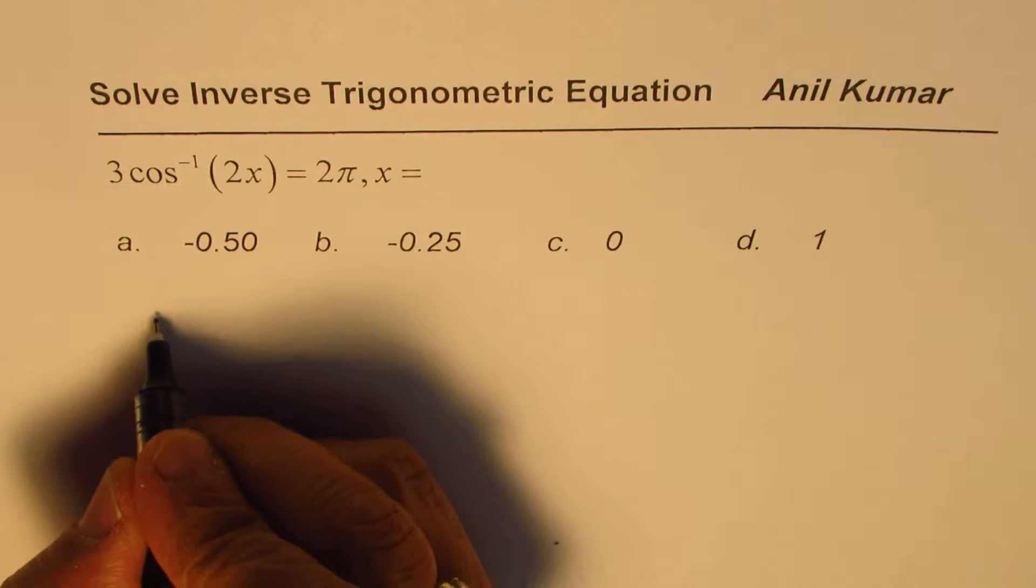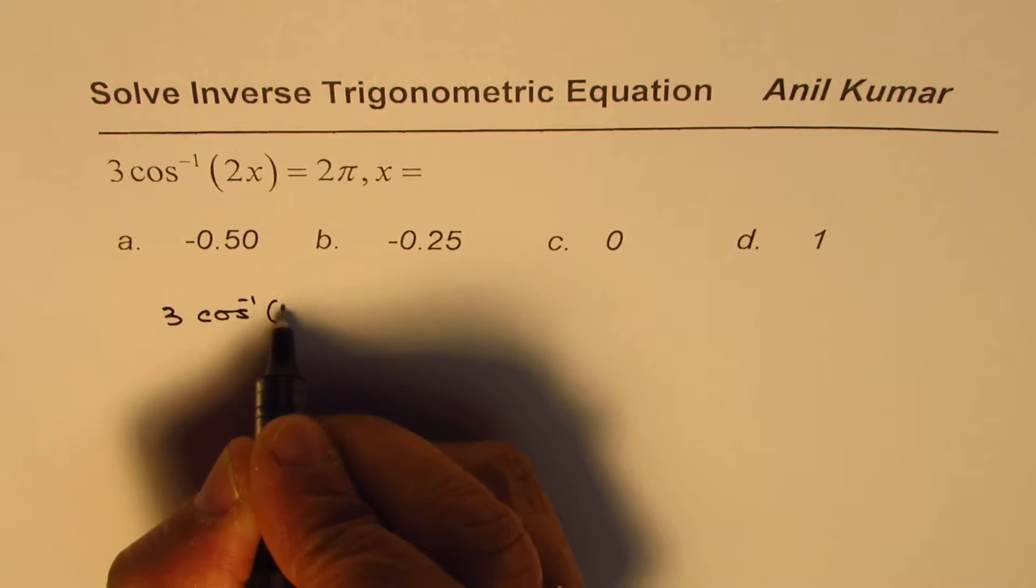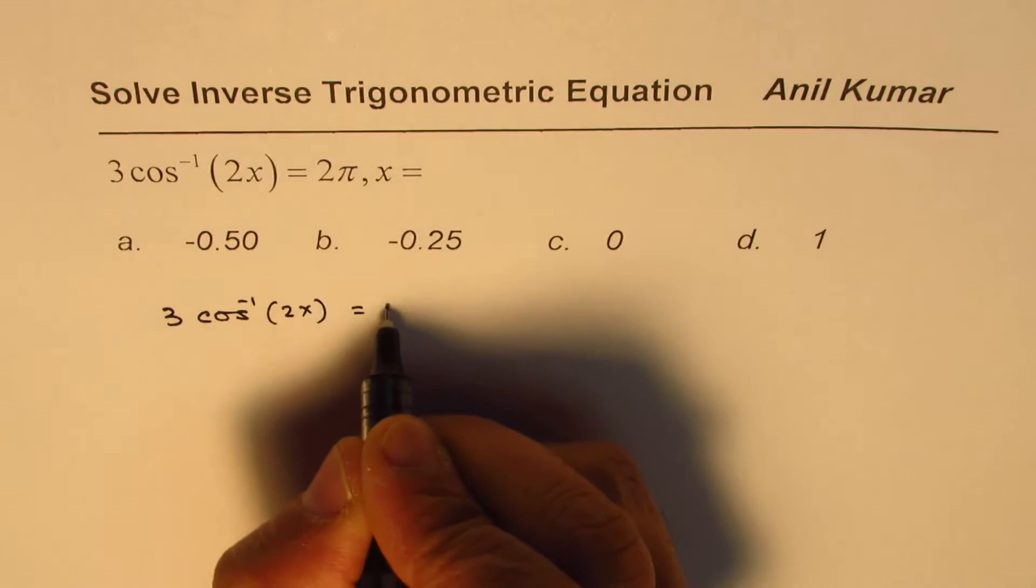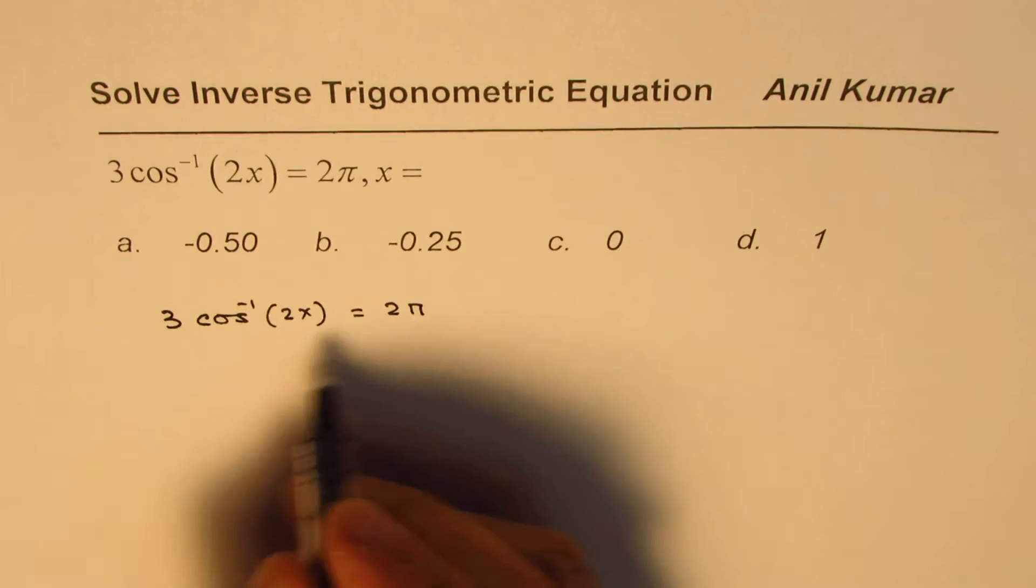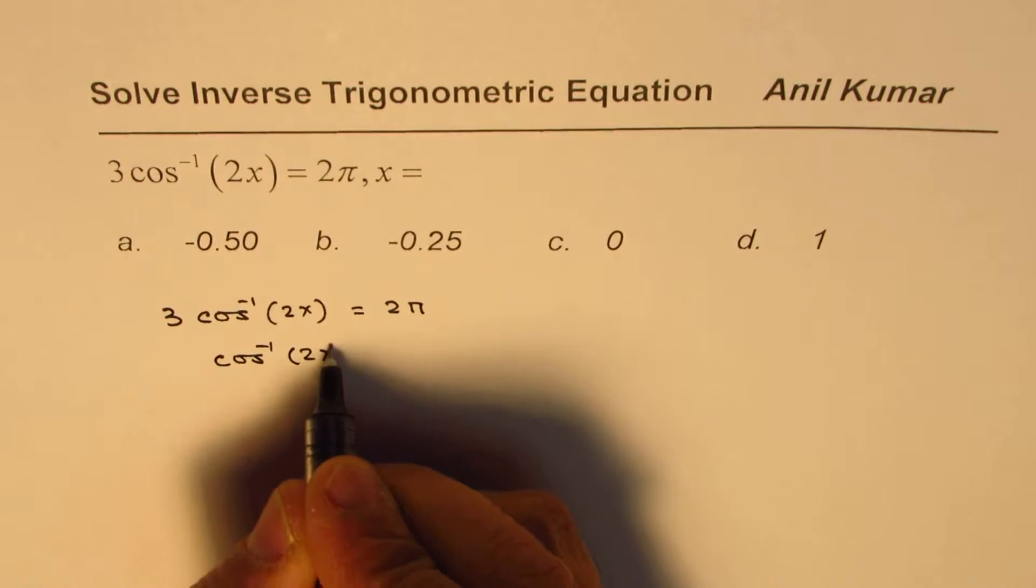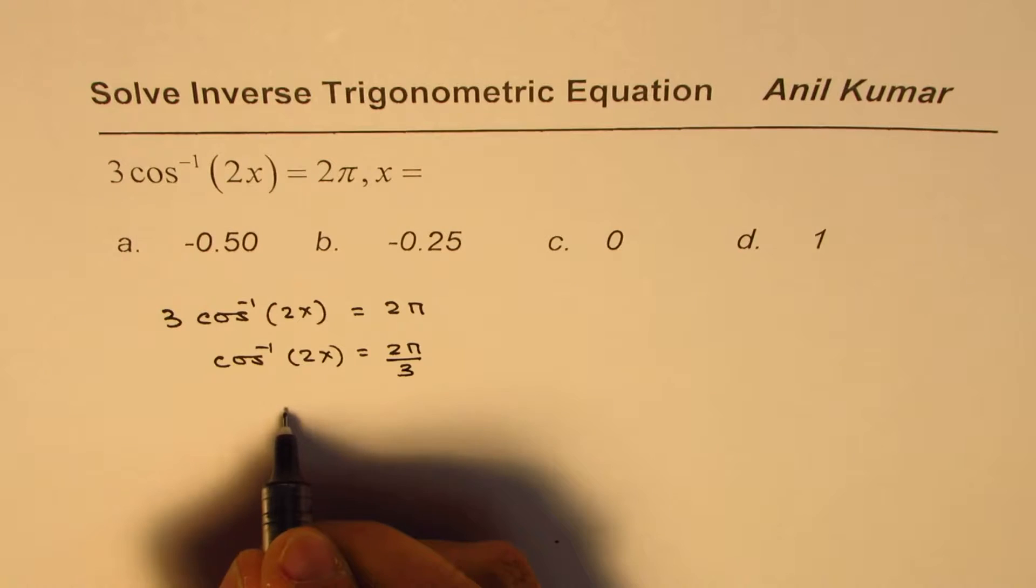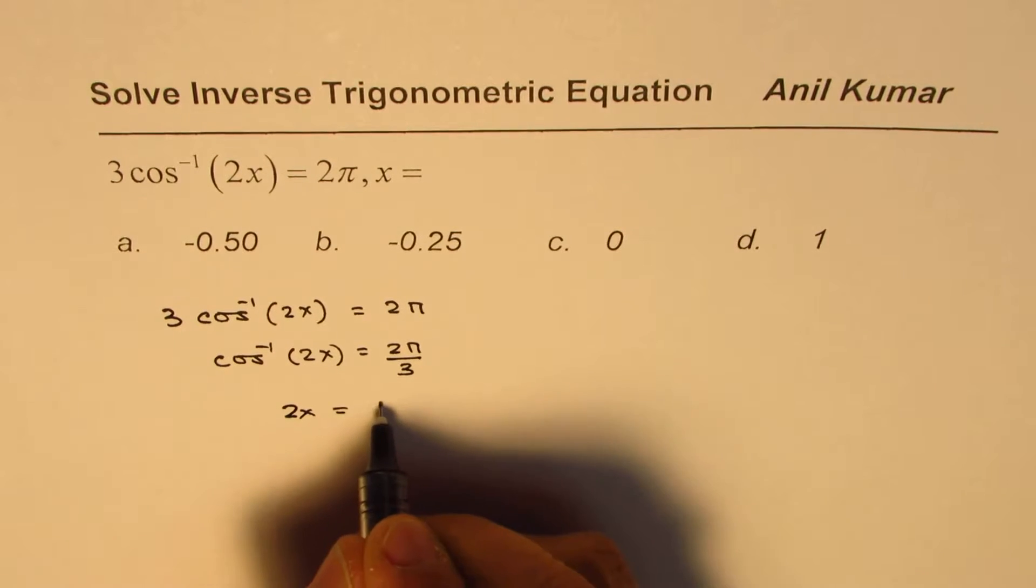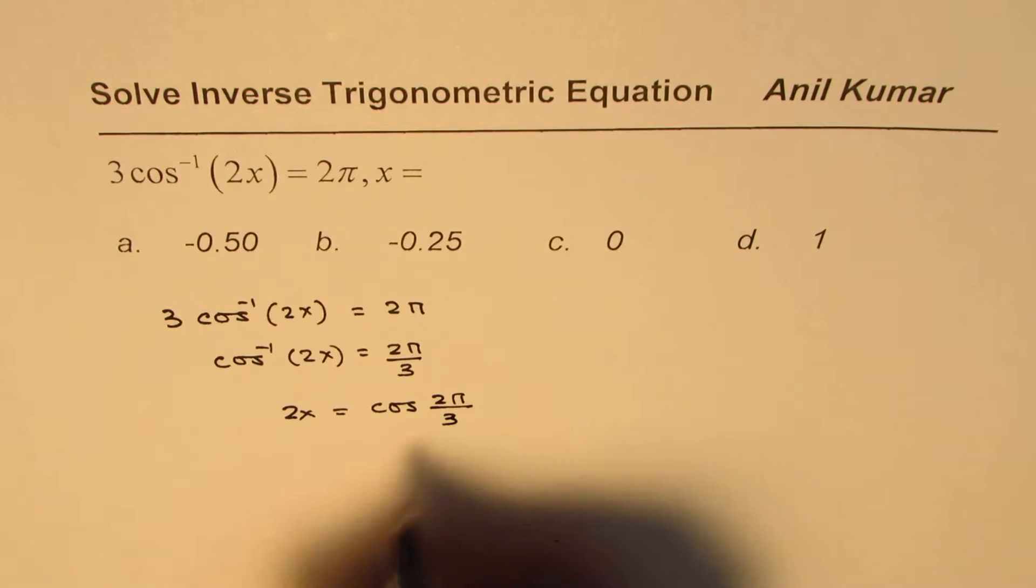Let's see how to solve this kind of equation. So we have 3 cos inverse 2x equals to 2π. We can divide this by 3, and we can write this as cos inverse of 2x equals to 2π by 3, or 2x equals to cos of 2π by 3.